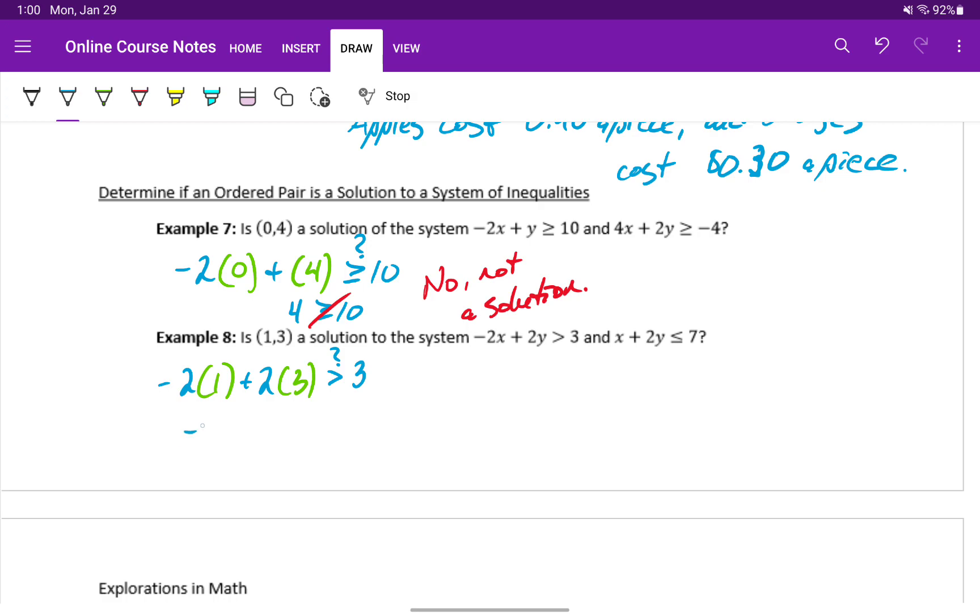On the left-hand side we'll get negative 2, plus 6, which is going to give us 4, and that is greater than 3, meaning that coordinate pair does make the first inequality statement true.